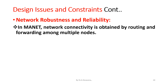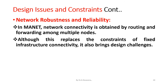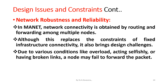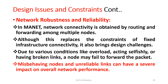The next constraint is network robustness and reliability. In MANET, network connectivity is obtained by routing and forwarding among multiple nodes. Although this replaces the constraints of fixed infrastructure connectivity, it also brings design challenges. Due to various conditions like overload, acting selfishly, or having broken links, a node may fail to forward packets. Misbehaving nodes and unreliable links can have a severe impact on overall network performance.